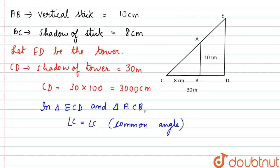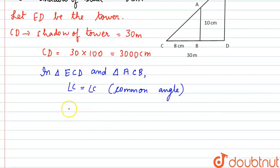Then here we know that angle ABC and angle EDC both are 90 degrees because the stick and the tower are standing vertically to the ground. So we can say angle B and angle D are equal to 90 degrees and the reason is tower and stick are vertical.